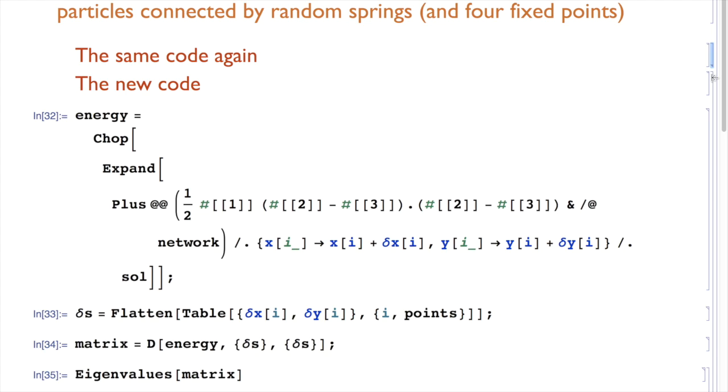Then we look what happens if we add a little bit more code, and we'll try to solve the same problem again, but essentially trying to look what happens for fluctuations about the equilibrium.